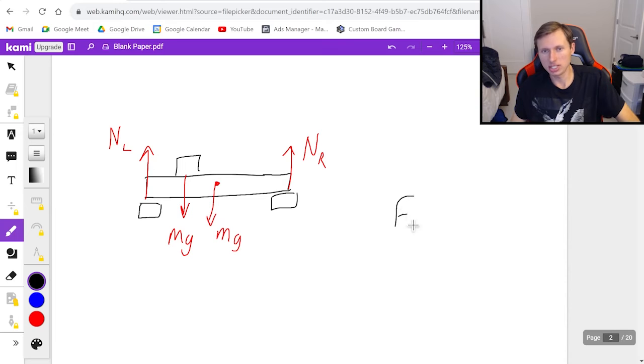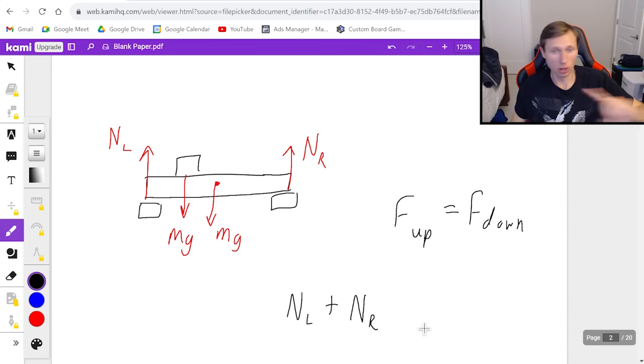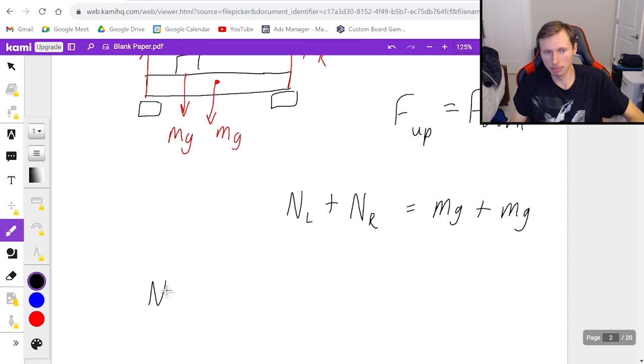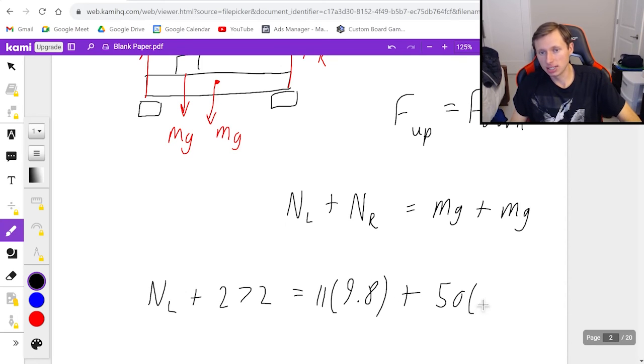The way I can find normal force on the left side very quickly is I just use a relationship from earlier in this year where I say the forces going up must equal the forces going down. This is Newton's second law when you're not moving up or down. This is almost going to seem like easy mode because all I'm going to write is NL plus NR, no torques, no distances, just the forces, equals the two mgs plus each other. Remember, they are different masses: one is the 11, the other is the 50. So it's NL plus 272 equals 11 times 9.8 plus 50 times 9.8.